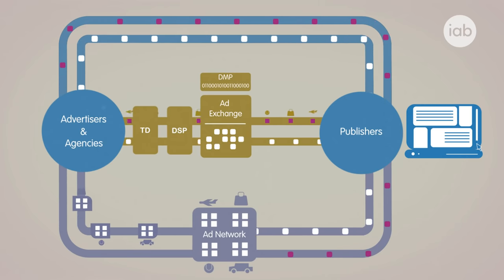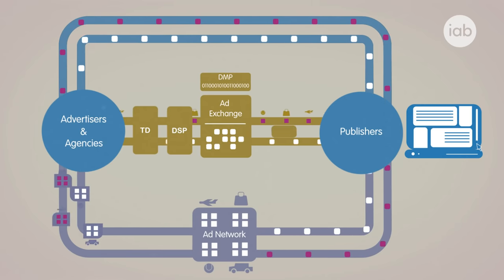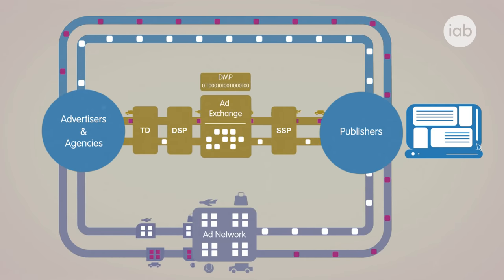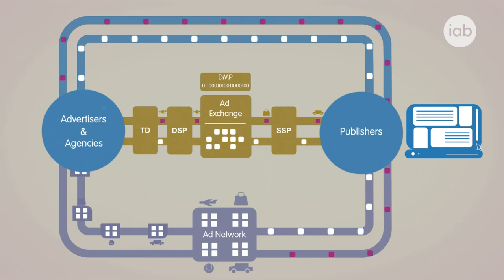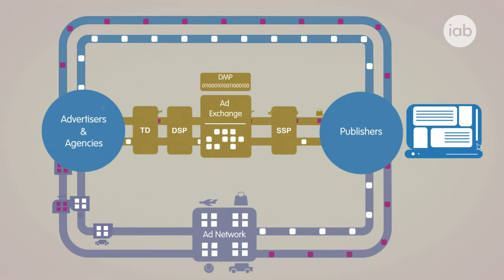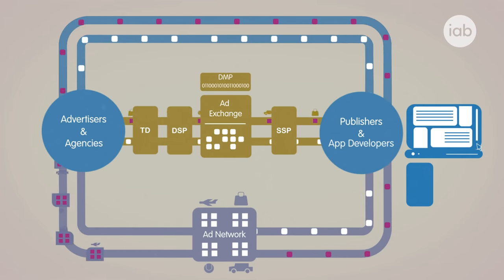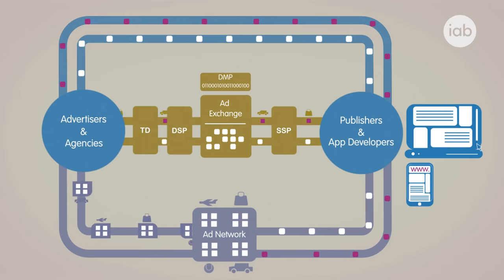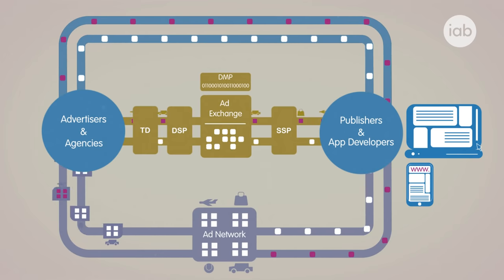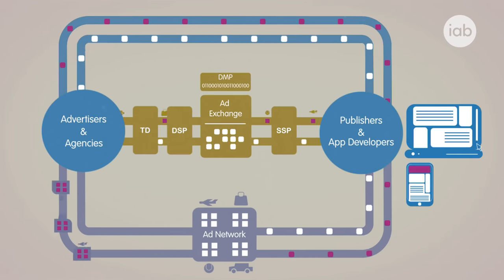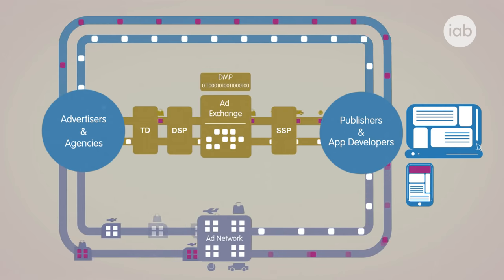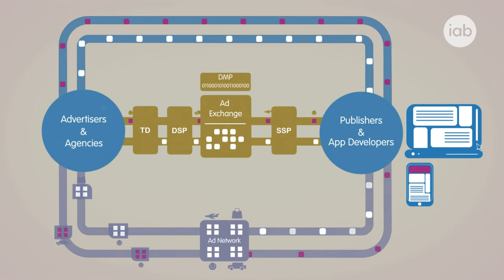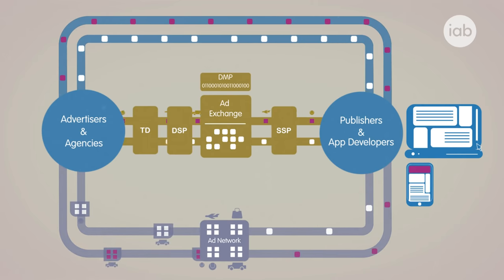On the sell-side, publishers made their impressions available to aggregated sell-side platforms. With the rapidly increasing availability of mobile inventory, app developers started to appear alongside traditional desktop publishers. The role of the ad network diminished as they adopted this new technology, and today only a small proportion of inventory is traded this way.